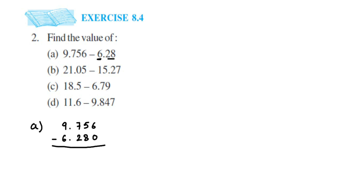There's a blank space, so just put 0. Now subtract: 6 minus 0 is 6. 5 minus 8 — we cannot do it, so take a borrow from 7; 7 becomes 6 and 5 becomes 15. 15 minus 8 is 7, and 6 minus 2 is 4. Place the decimal point. 9 minus 6 is 3. So the answer is 3.476.